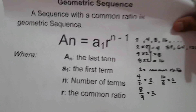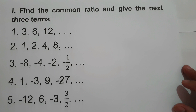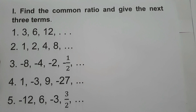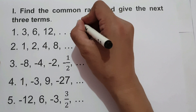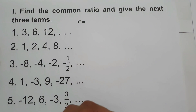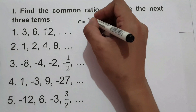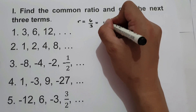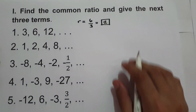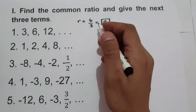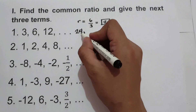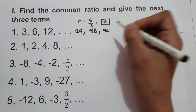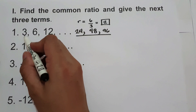Let's have an example. We are going to find the common ratio and give the next 3 terms. For example, the sequence 3, 6, 12. First, let us find the common ratio, denoted by small letter r. To find common ratio, simply divide the second term by the first term: 6 divided by 3 is 2. So the next 3 terms are 12 times 2 is 24, then 24 times 2 is 48, and 48 times 2 is 96. So these are the next 3 terms in the sequence 3, 6, 12.